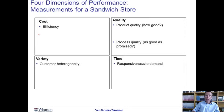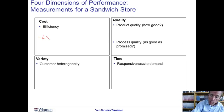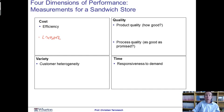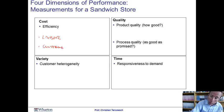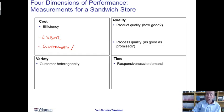Now, imagine you get hired as a consultant to Subway, and you're asked to come up with a performance measurement system that tracks these four dimensions. What would you measure? On the cost side, you would start by looking at labor productivity — measures such as sandwiches per employee, customers served per employee, or the minutes it takes to make a sandwich. You could also look at customers per restaurant to measure how efficiently you're using the real estate investment of renting the restaurant.